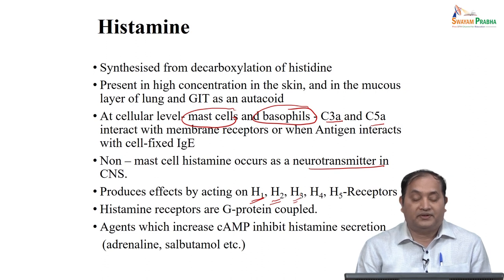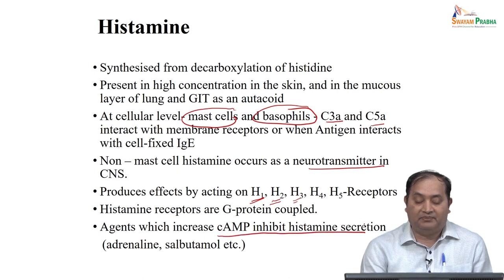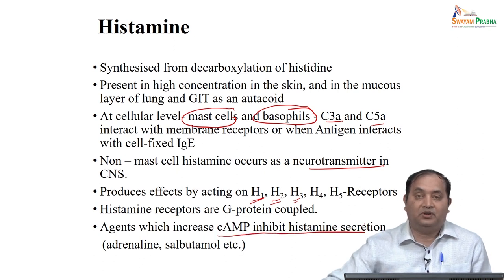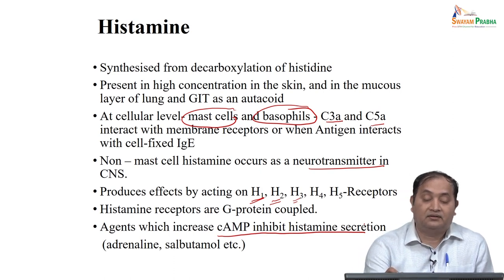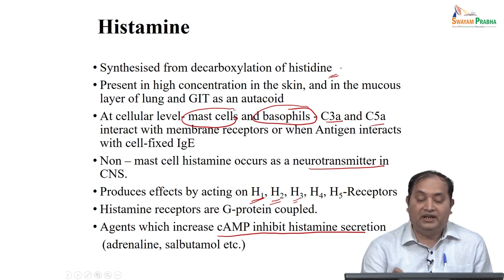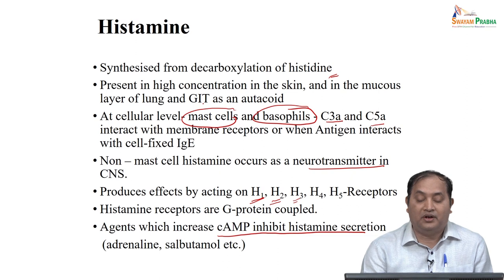These receptors are basically G protein-coupled receptors. When you talk about agents acting through cyclic AMP to inhibit histamine receptors, you can take the example of adrenaline or salbutamol. As stated, histamine is synthesized from histidine, mostly in areas like skin, mucous membrane, lungs, and GIT as an autocoid.